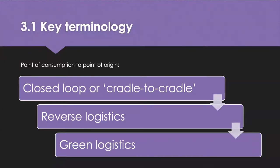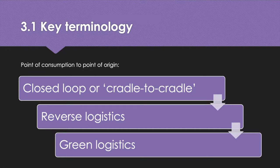Reverse logistics is not the same as a closed loop supply chain. Closed loop supply chains, also known as cradle to cradle, are designed and managed from the start to consider both forward and reverse flows, with minimal leakage and loss. They view materials as nutrients that circulate in closed loops — everything is used, nothing is wasted. Reverse logistics encompasses activities that bring products, components and materials from the point of consumption back to the point of origin, and that's not the same as waste management. Green logistics is related to reducing carbon consumption and emissions in production and transport processes.